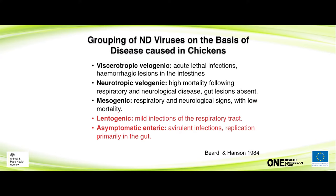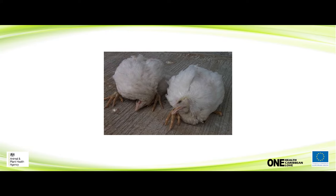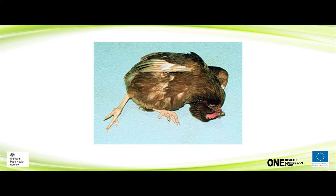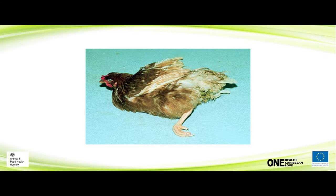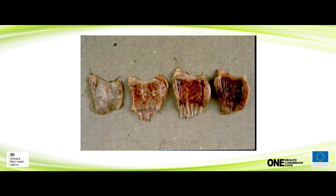The lentogenic and asymptomatic enteric strains are the avirulent strains. The lentogenic strains are basically what we use for vaccines, while the asymptomatic strains are present in wild bird populations and will occasionally be seen in poultry. Clinically, affected birds show profuse green watery diarrhoea, quite distinctive, and are emaciated. There is blindness, incoordination, ataxia, and flaccid wings, making birds obviously lame. Characteristic hemorrhages are seen in both the gut and the proventriculus.